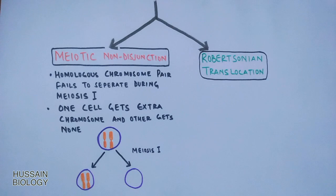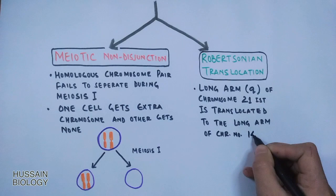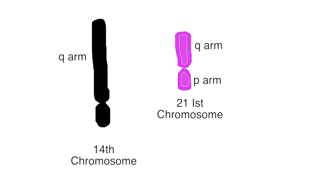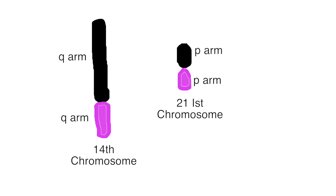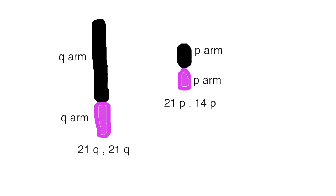The other cause is Robertsonian translocation. In this event, the long arm (the q arm) of the 21st chromosome is translocated to the long arm of the 14th chromosome. As shown in the animation, the q arm of the 21st chromosome translocates and attaches to the q arm of the 14th chromosome, producing a 21q;14q chromosome. We also get a smaller chromosome consisting of 21p and 14p, which is lost in successive cell divisions because of its smaller size.